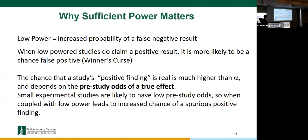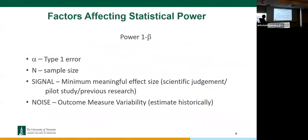The probability of your statistically significant result being a true finding actually depends on the probability that there is a true effect in reality before you even design your study. In very small experimental studies, the chance of there being a true effect may not be very high. When you combine that with low power, it increases the chance of a random fluctuation creating a statistically significant result.